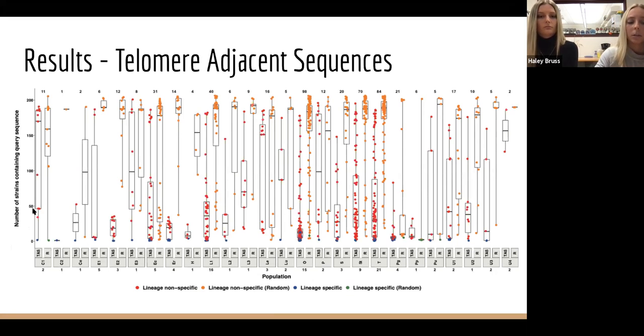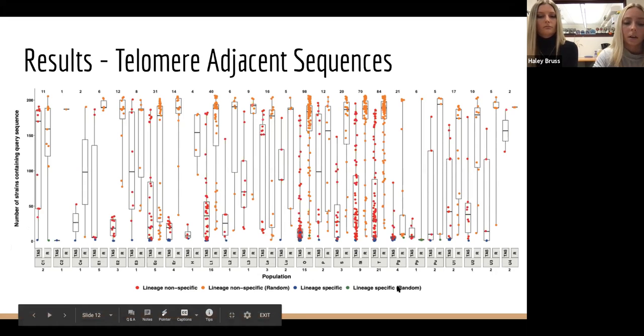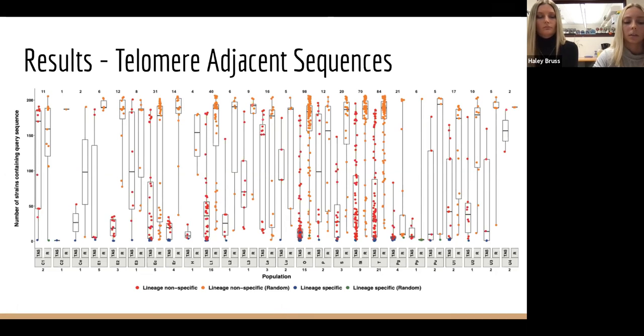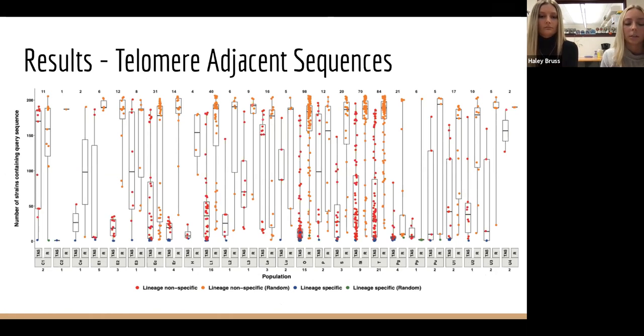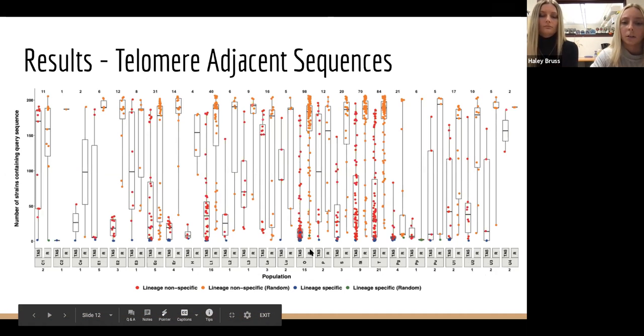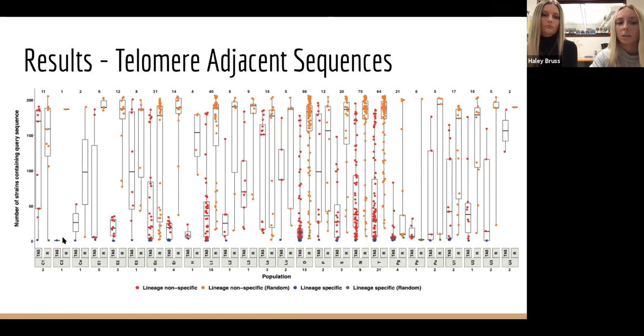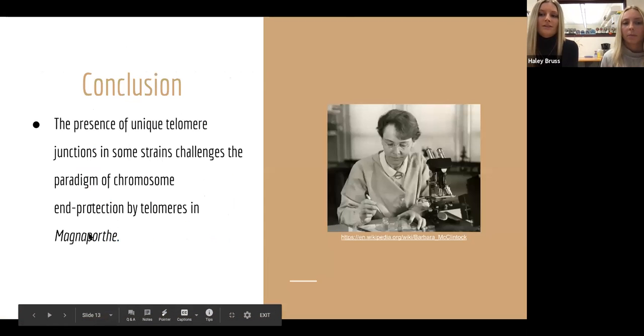And this is the box plot that Dr. Mostafa generated from the master sheet that I just showed you. And the x-axis represents the population. And within each lineage, there's the telomere adjacent sequences and also random samples, which served as a control to eliminate any bias in our study. And the y-axis represents the number of strains that contain the query sequence. So the blue and green dots are going to demonstrate hits that are lineage specific, as noted down here. And that means that they're unique to that lineage, while the red and orange dots demonstrate hits that are non-lineage specific. So in other terms, that means that the sequences are shared by strains among different lineages. And then you have your hits down here at the bottom underneath those populations and the total numbers at the top. And the box plot ultimately demonstrates that along with telomere junctions, telomere adjacent sequences showed poor conservation among host plants as well. And you can specifically see that in population Oryza. You can see the abundance of dots, especially blue dots, down here at the bottom, showing that only a few number of strains have these sequences. And all in all, only 39% of those host plants showed lineage specificity.